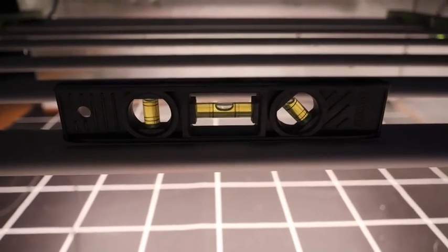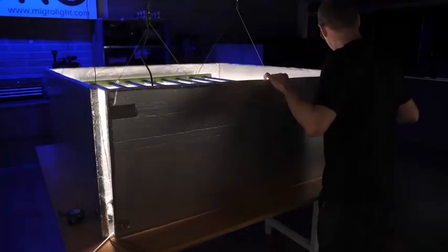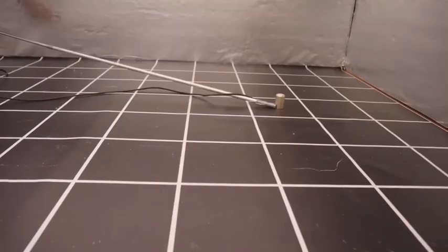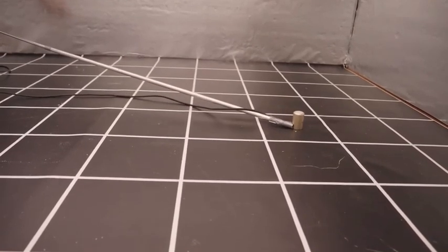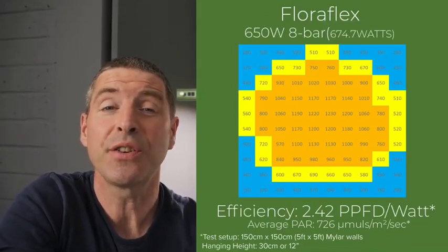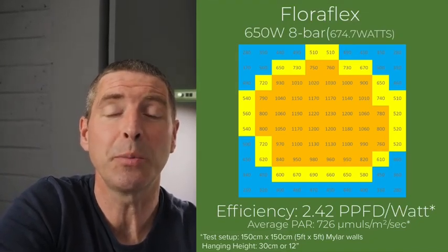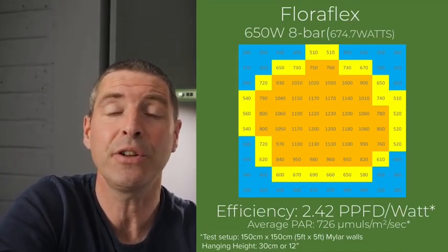It's specified to hang between 6 inches and 12 inches, which I thought was a little bit low. But I tested at the 12 inches. The average PAR at 12 inches hanging height is 726 micromoles per meter square per second, which delivers a system efficiency of 2.42 micromoles per watt or usable PPF per watt, which is an excellent result.